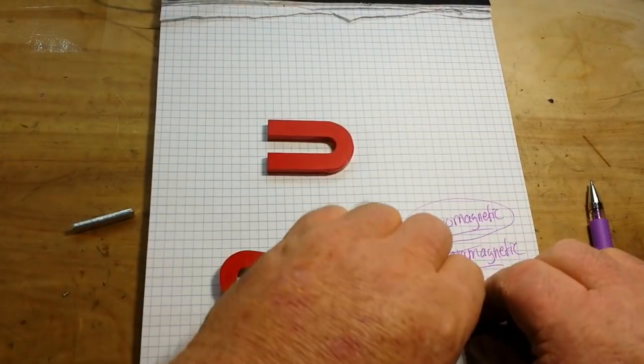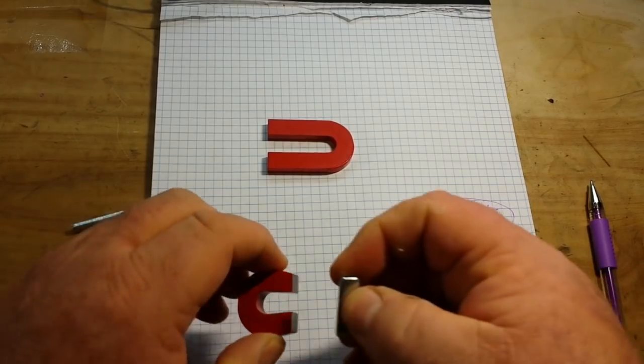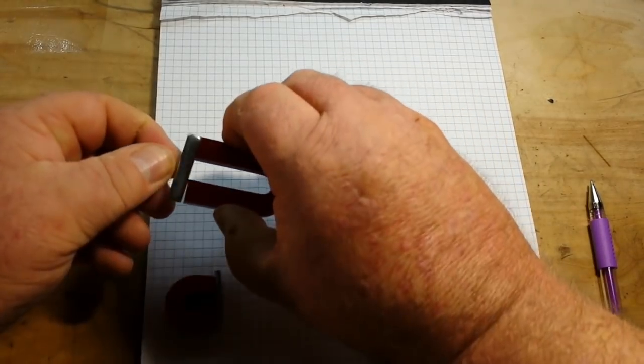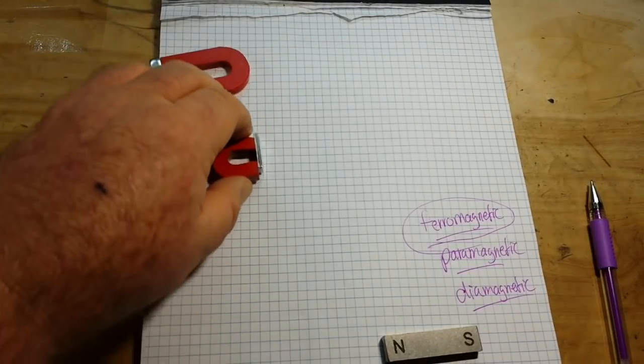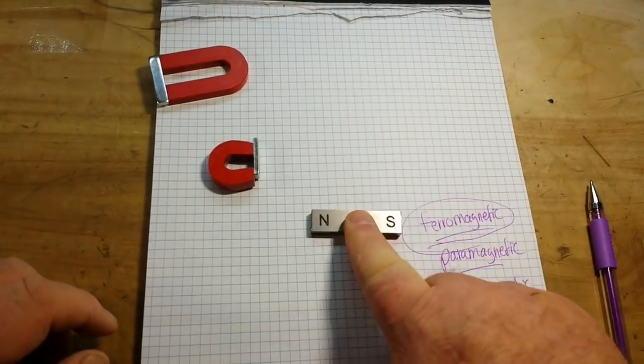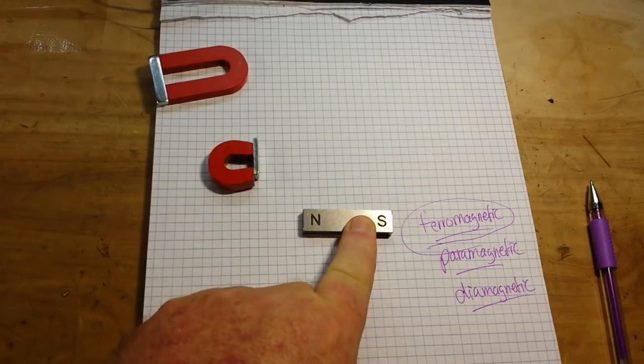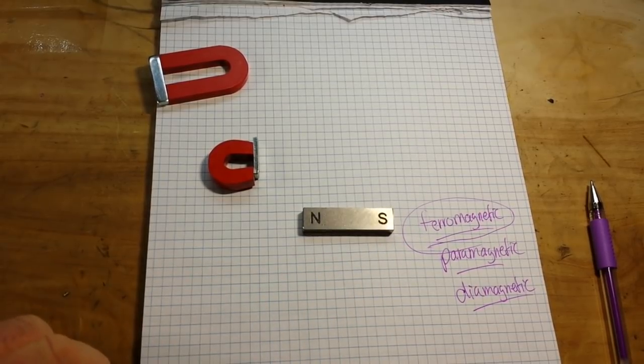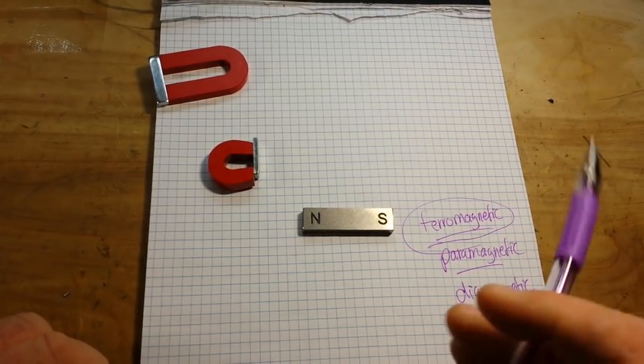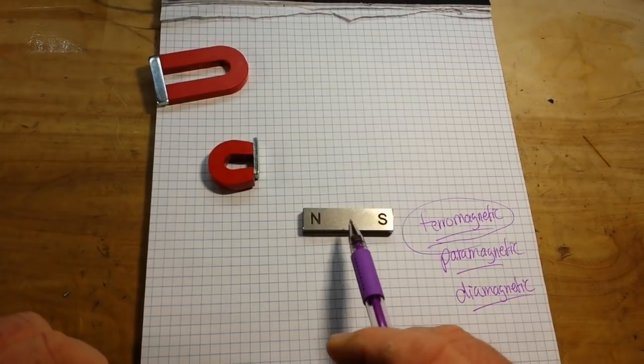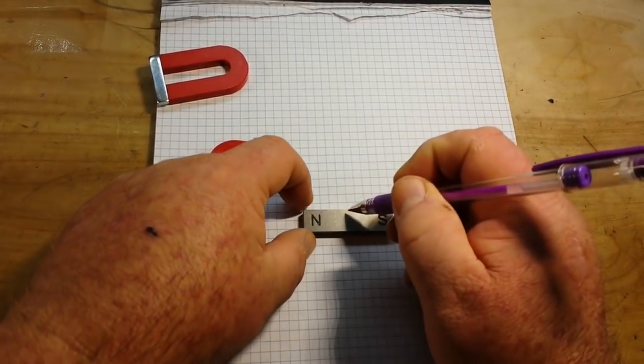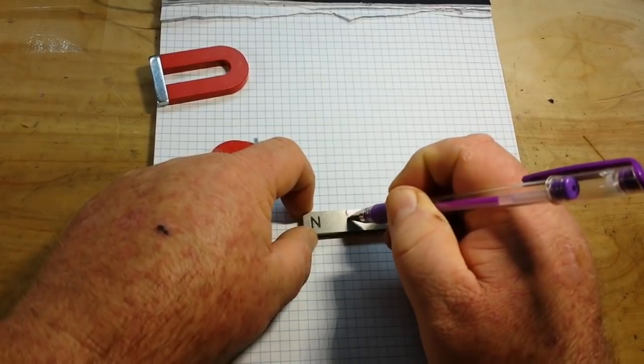Another main difference between a static charge and a magnetic charge or a magnetic field is a magnetic field is polar. This magnet has a north pole, it has a south pole. If I were to split it down the middle, we would have another south pole here and a north pole here.